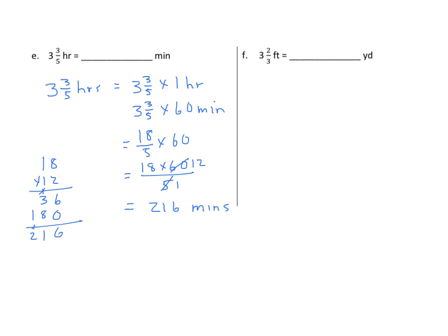One last example of simple conversions. I have 3 and 2 thirds feet equals 3 and 2 thirds times 1 foot. 3 and 2 thirds times, well, 1 foot is the same as 1 third of a yard. So, I'm going to now change this to an improper fraction. 3 times 3 is 9, plus 2 is 11. 11 thirds times 1 third equals 11 times 1 over 3 times 3. And we get 11 ninths.